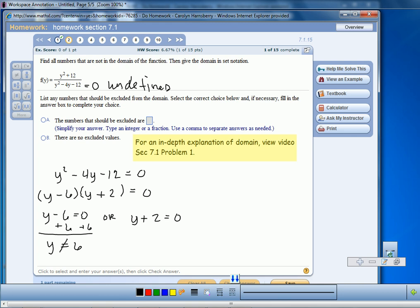To solve the second equation, we'll subtract 2 from both sides and we get Y equals negative 2.